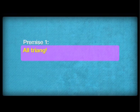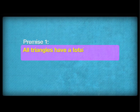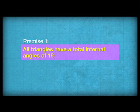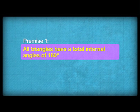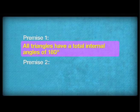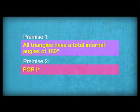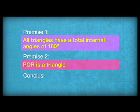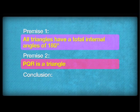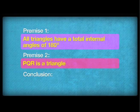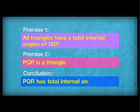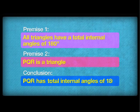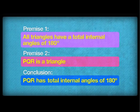Let's examine these premises. Premise one: all triangles have total internal angles of 180 degrees. Premise two: PQR is a triangle. So, the conclusion that we can safely draw is that PQR has total internal angles of 180 degrees.